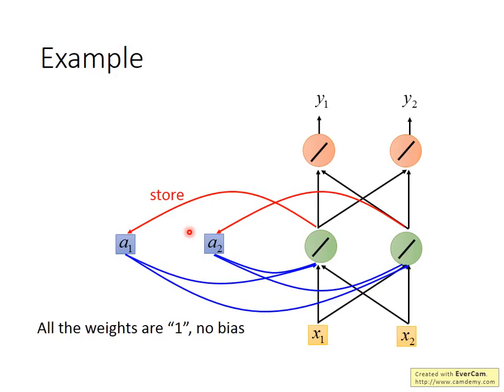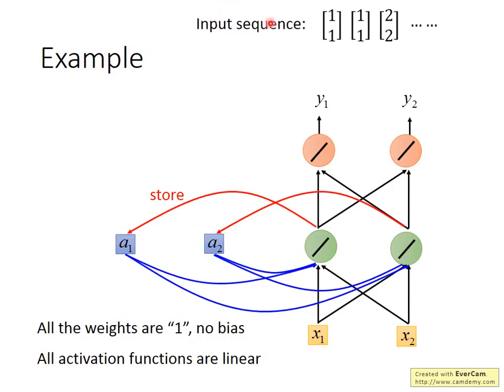For better understanding, let's walk through an example directly. Assume all weights in the network are 1, all neurons have no bias, and all activation functions are linear. Suppose our input is a sequence: 1,1 then 1,1 then 2,2. Before using the recurrent neural network, you must give the memory initial values — we assume the values in memory are 0 before putting anything in.